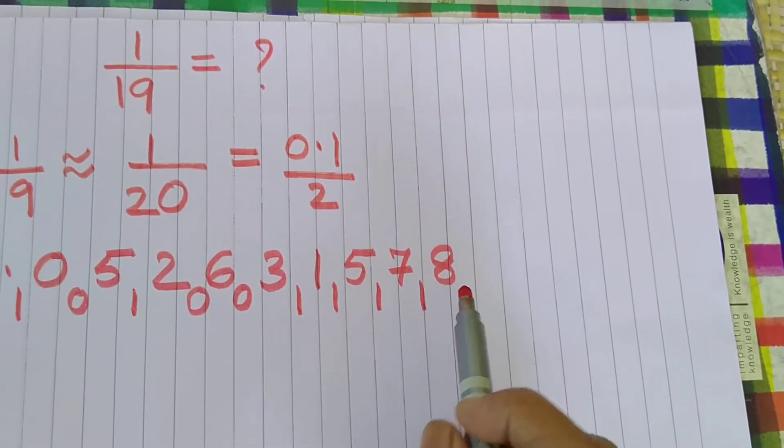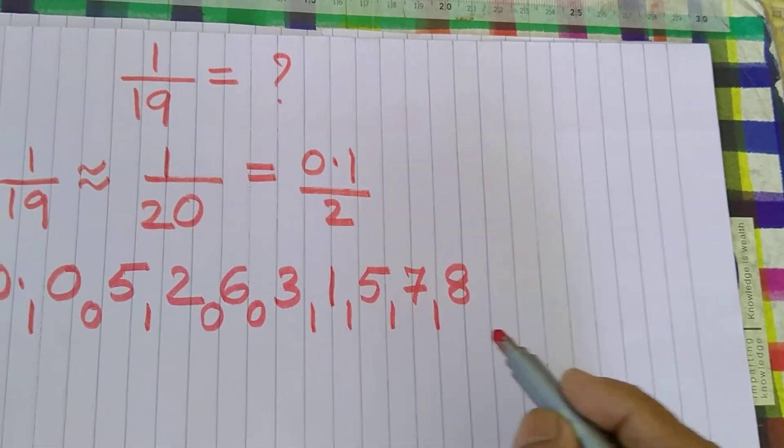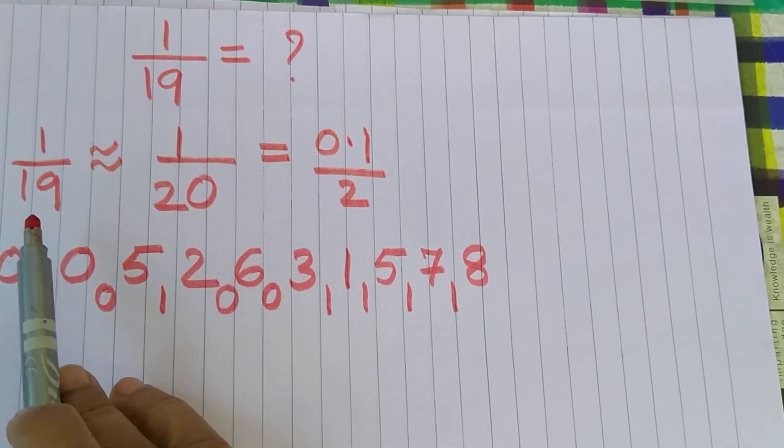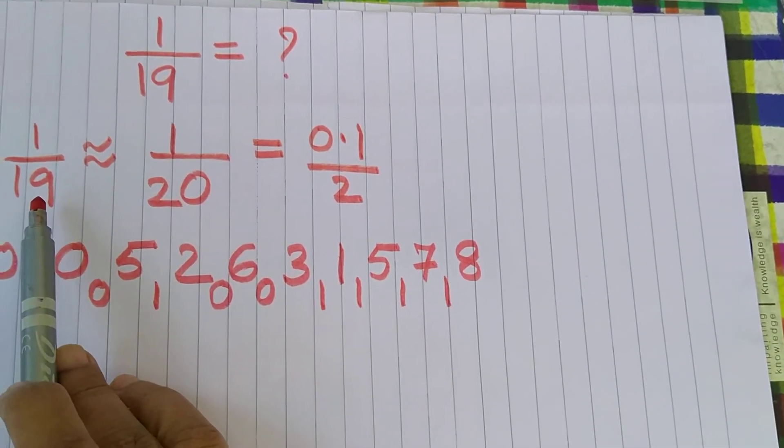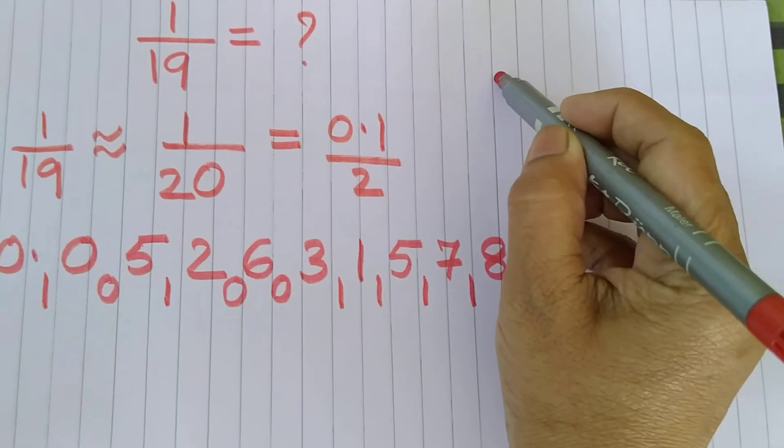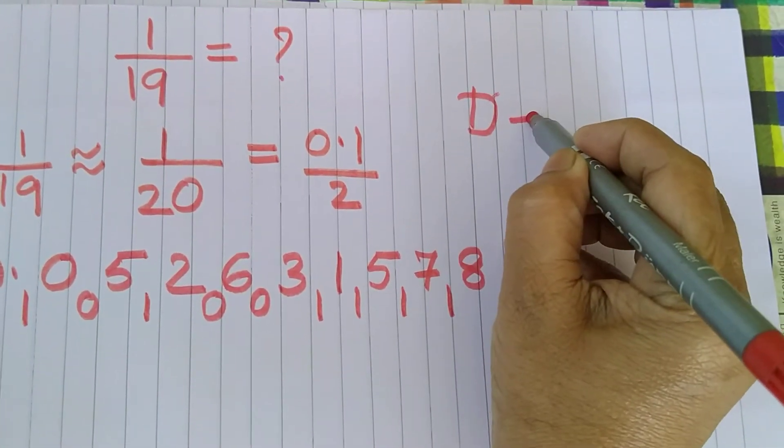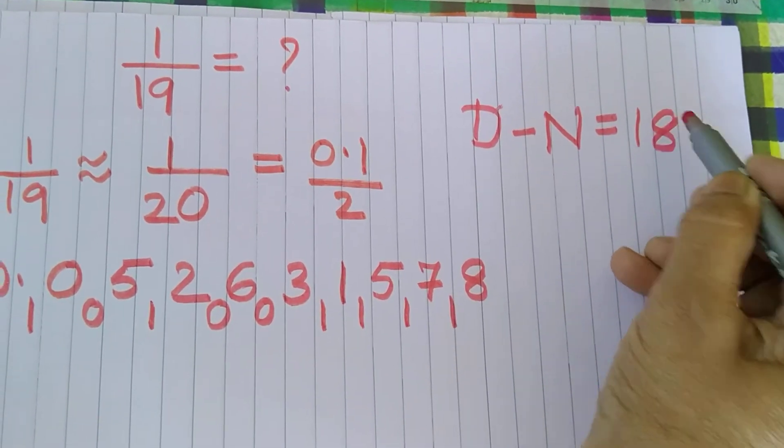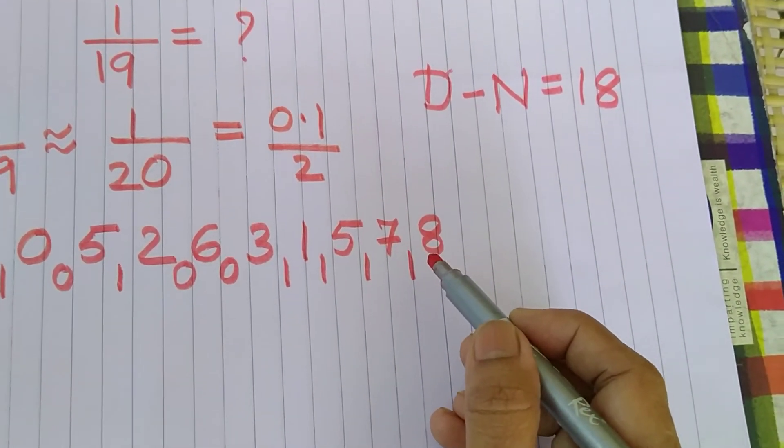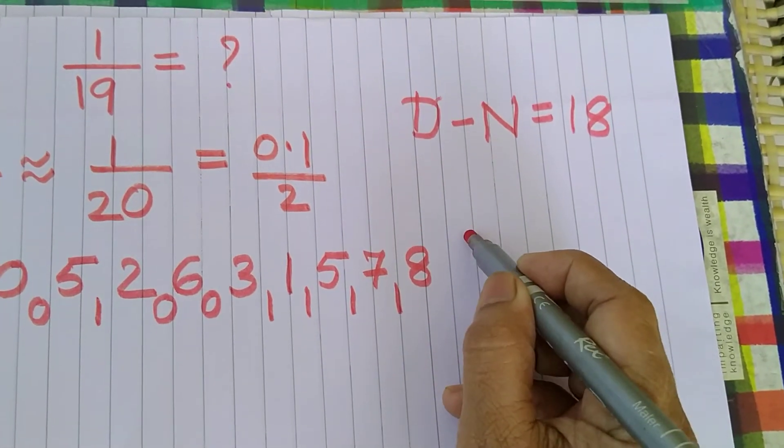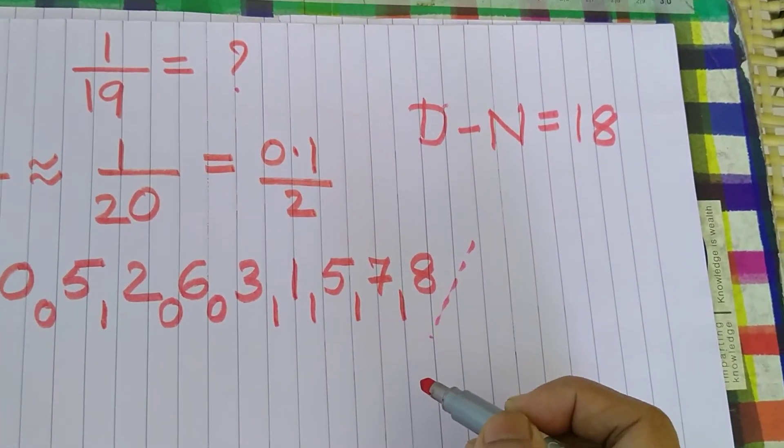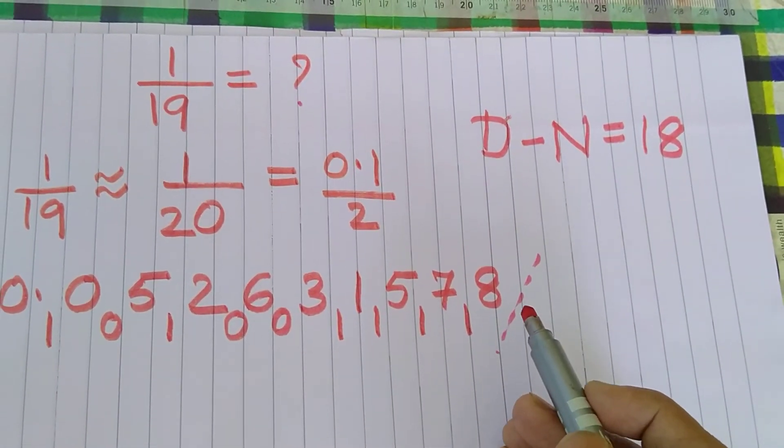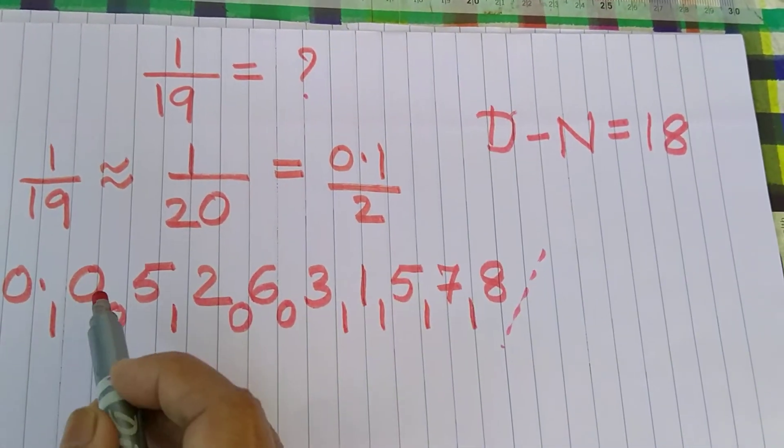Now notice here what has happened is the numerator is 1. Denominator is 19. So the denominator minus numerator is 18 which we have got here. So here what we simply do is we need not calculate after this. We simply go on taking their complement from 9.